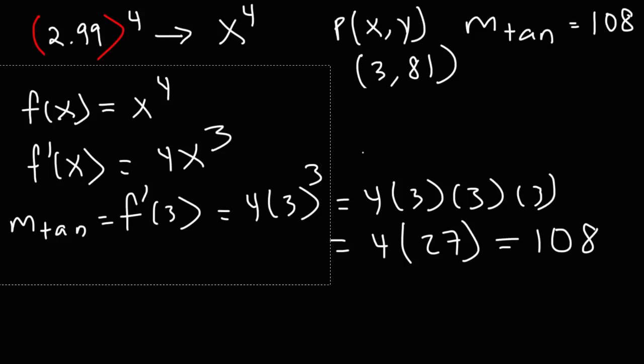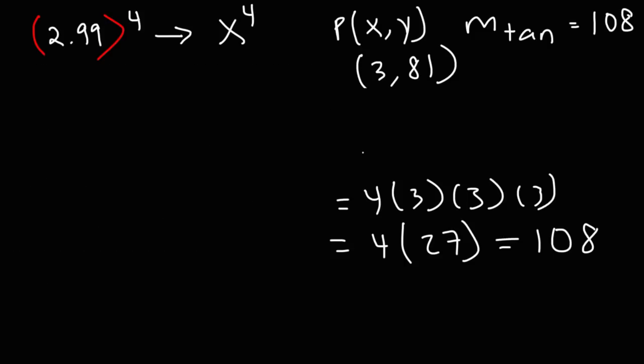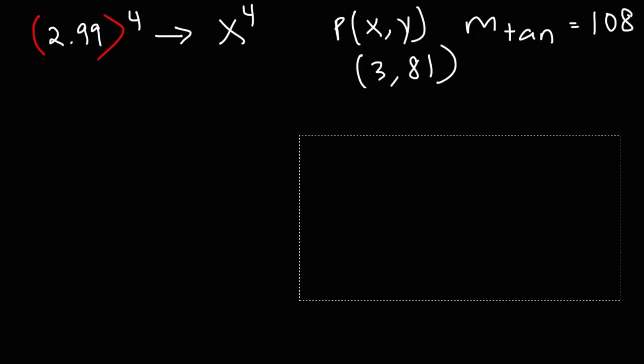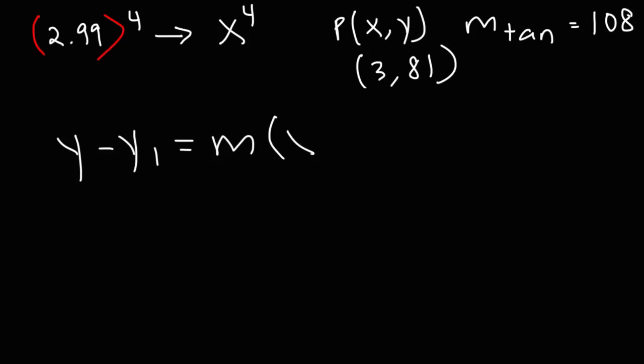So now we have everything that we need to write our linear equation that will approximate the curve f of x equals x to the fourth at x equals 3. And we're going to use the point slope formula. Y minus y1 is equal to m times x minus x1. So we have our m value. x1 is 3. y1 is 81. So we're going to have y minus 81 is equal to 108 times x minus 3.